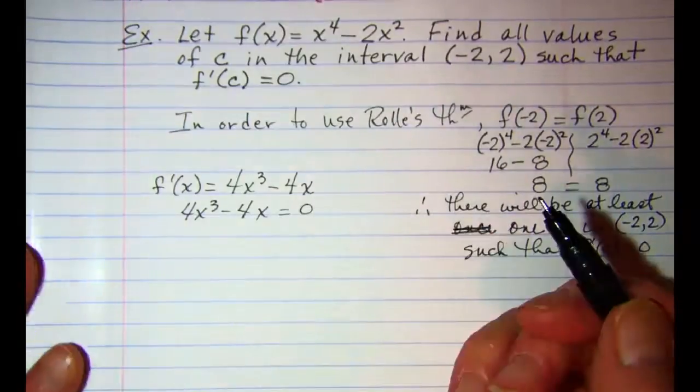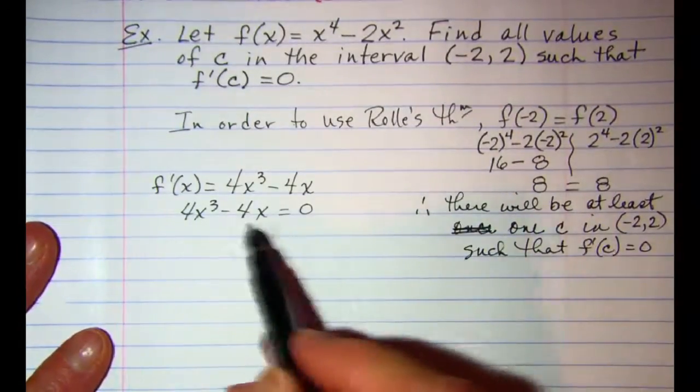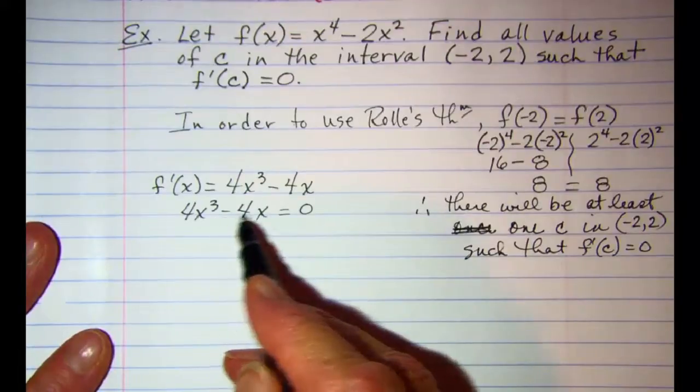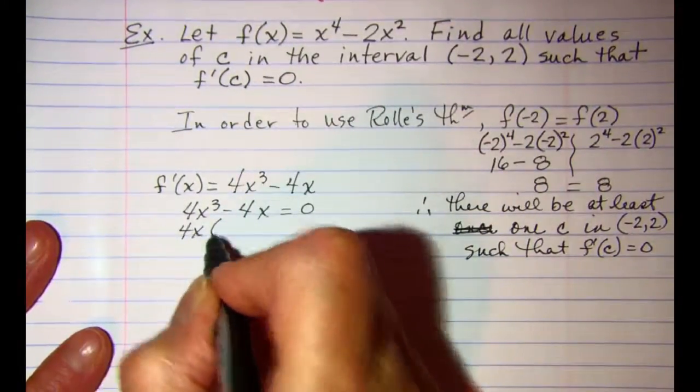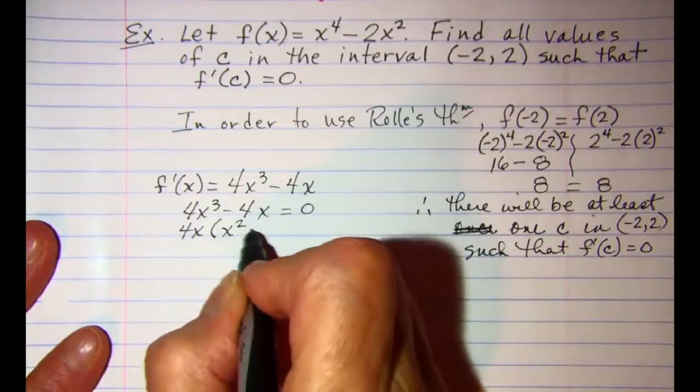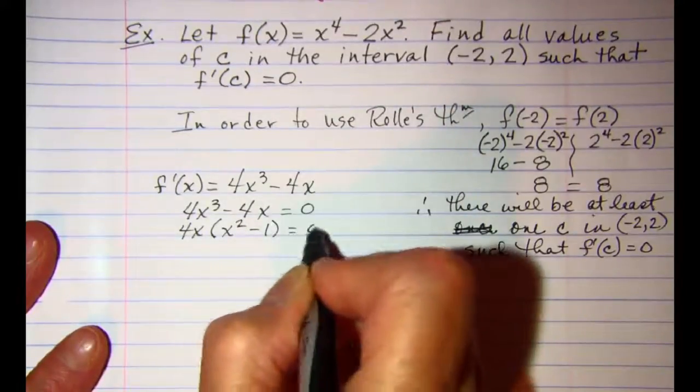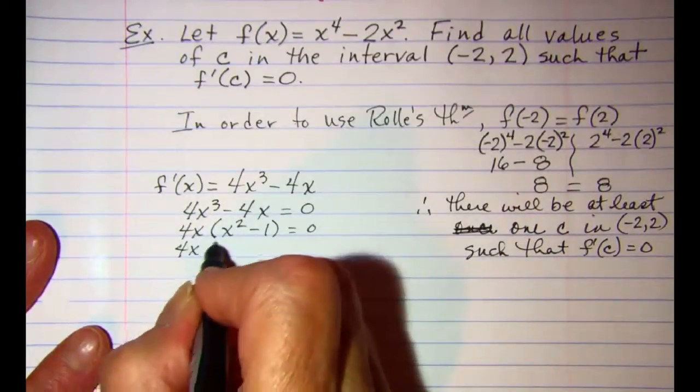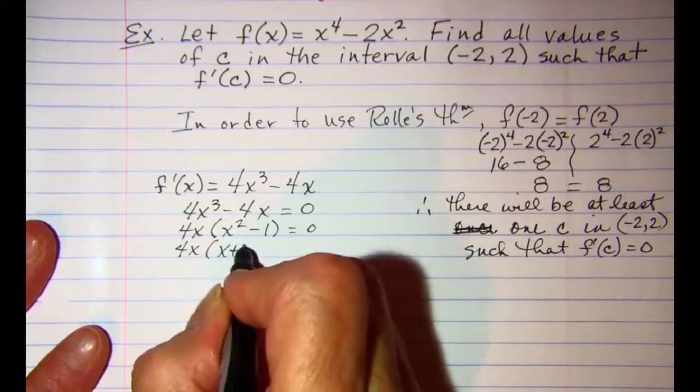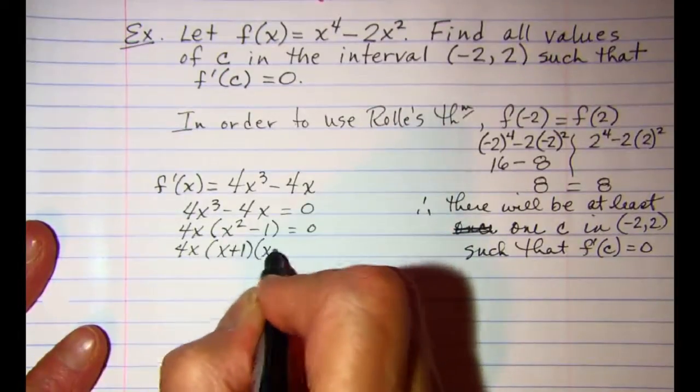and find the x values that make this happen. I can factor 4x out and then this is the difference of squares so I have 4x times the quantity x plus 1 x minus 1.